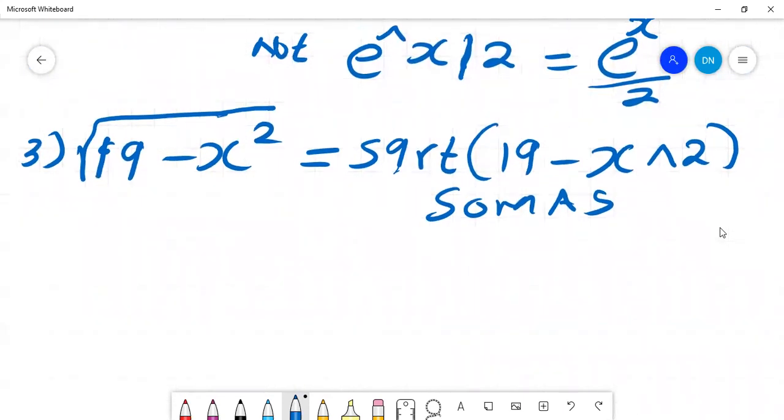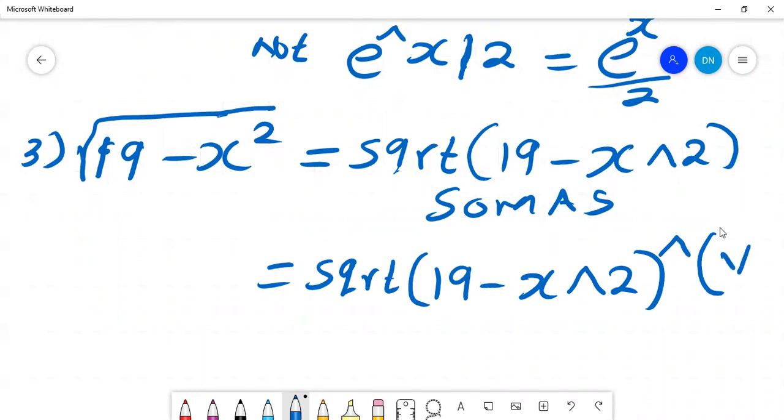There is also another way you can do the same. You could have written the same in SOMAS as sqrt(19 minus x squared). You don't put the square root there, you just say 19 minus x squared to the power one over two, and that will give you the square root.